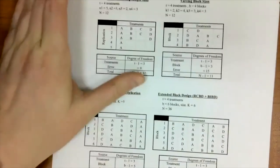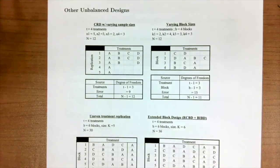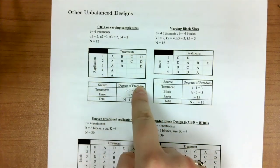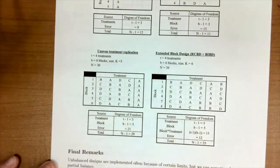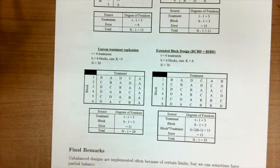Let's talk about some other unbalanced designs. There are other ways that you can make unbalanced designs. We can have completely randomized with varying sample size. We can have varying block size. We can also have uneven treatment replications. Here we can also have an extended block design, an RCBD plus a balanced incomplete block design. Once we start to learn about the foundational models, RCBD, CRD, generalized randomized complete block design, Latin squares, and a basic idea of unbalanced design.